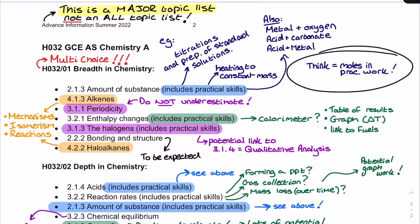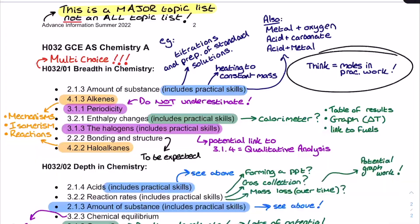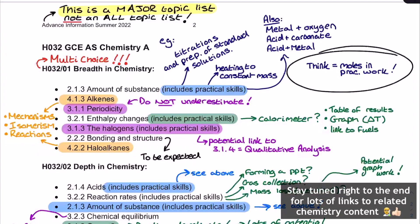The advanced information from OCR for their AS level chemistry specification has been out for a short while. This is all ahead of the summer 2022 exam series, and this list of major topics in the breadth in chemistry and depth in chemistry papers is going to be incredibly useful ahead of the summer examination season. In this video, what I'm going to do is take you through what I've noticed about the list, linking it to the practical work I recommend you cover in your revision, but also discussing the kinds of things that aren't on the list and my advice surrounding how to use this carefully with a hefty pinch of salt ahead of the summer exams.